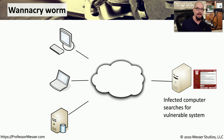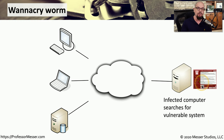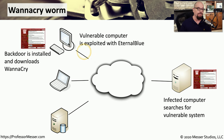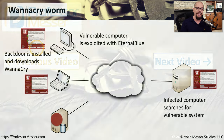A major worm infestation occurred on Friday, May 12th of 2017 — the WannaCry worm. This worm not only propagated itself automatically, but it was also very destructive because it installed crypto malware and began encrypting people's personal files. It took advantage of a vulnerability in Microsoft's Server Message Block version 1 (SMBv1), using an exploit called EternalBlue to find other vulnerable systems on the network and infect them. Once a vulnerable system was identified, it installed a backdoor application called DoublePulsar, which then downloaded the WannaCry ransomware and began encrypting files. This process automatically repeated itself, allowing the worm to propagate from computer to computer without any human intervention.